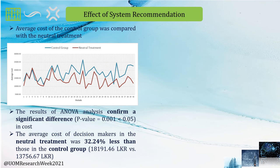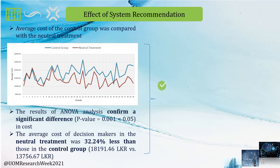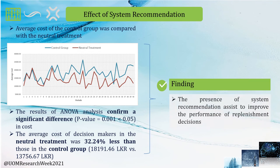These results led us to our first finding that ordering behavior of decision makers is more likely to change when they are given system recommendation. The result of ANOVA analysis confirms the significant difference in cost between the two groups. Further, we identified that the average cost of decision makers in the neutral treatment was 32.24% less than those in the control group. Therefore, we suggest that having the system recommendation helped to improve the replacement decision in the newsvendor industry.